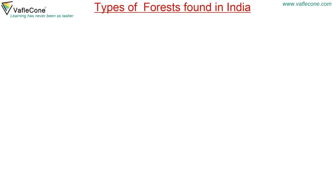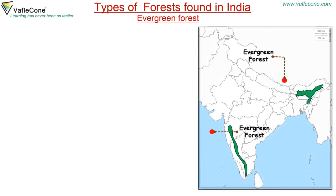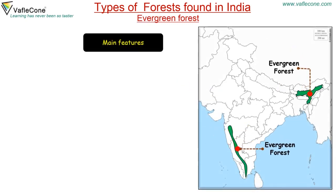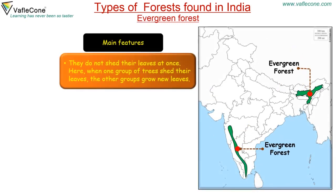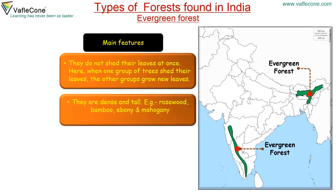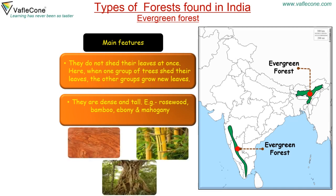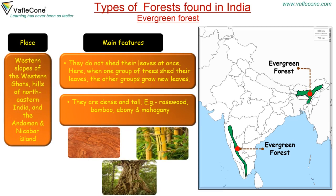Evergreen Forest: The main features are that they do not shed their leaves all at once. When one group of trees sheds their leaves, another group grows new leaves. They are dense and tall. Examples include rosewood, bamboo, ebony and mahogany. They are found on the western slopes of the Western Ghats, hills of northeastern India, and the Andaman and Nicobar Islands.